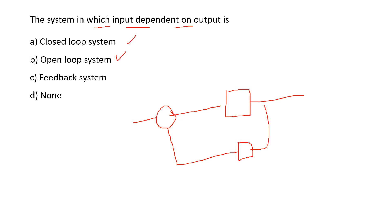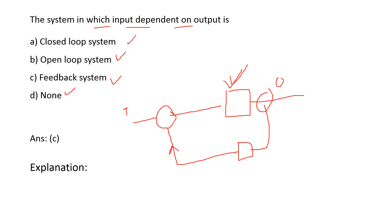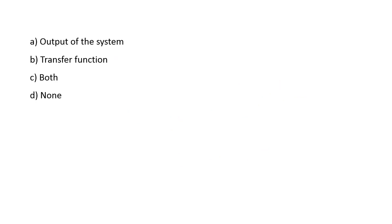Next: the system in which the input is dependent on the output. In a closed loop system, some part of the output is fed back to the input, meaning the input is dependent on the output. This type of system is also known as a feedback system. So both option A (closed loop system) and option C (feedback system) are the right answers.